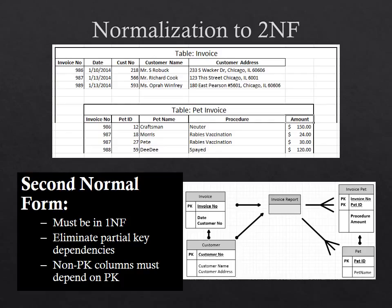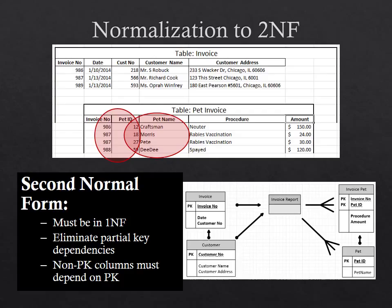Now let's move to the second normal form. First, to meet the second normal form your data has to be in the first normal form. The second normal form deals with a concept known as partial dependencies. The invoice table has a single column primary key, so it will meet the second normal form requirement. But the pet invoice table has a composite key made of two columns, so we need to check for partial key dependencies. Sure enough, the pet name column is only partially dependent upon the primary key — it is only dependent upon the pet ID portion alone — whereas the procedure and cost are dependent upon both the pet ID and the invoice ID. So we need to break out a pet table.